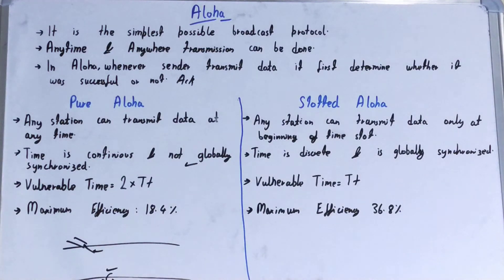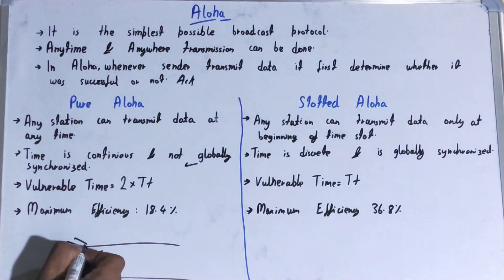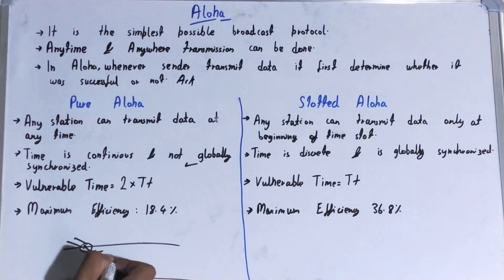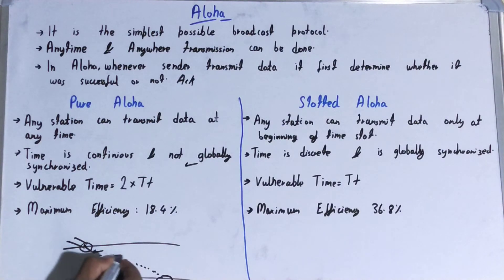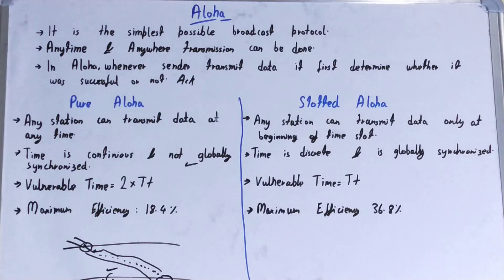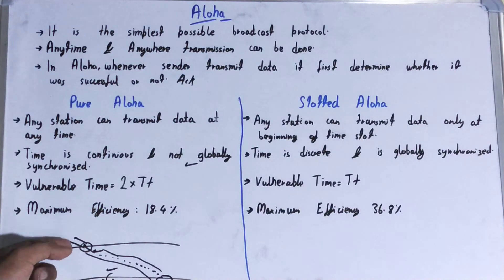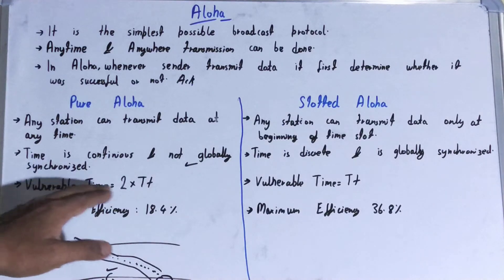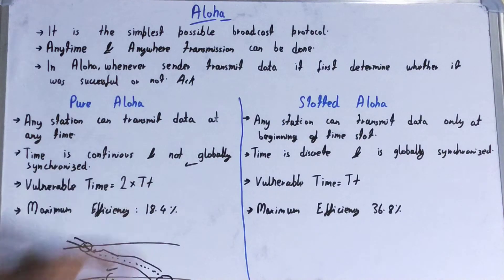The vulnerable time in pure ALOHA is basically the time needed for a packet to be transmitted from one station to the other station where it was intended to be sent. During this time, when a particular packet is being sent, that packet is vulnerable to collisions. The vulnerable time is 2T — from when the packet leaves the sender station until it reaches the receiver station.